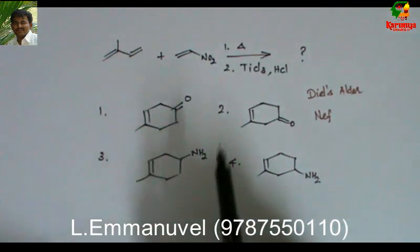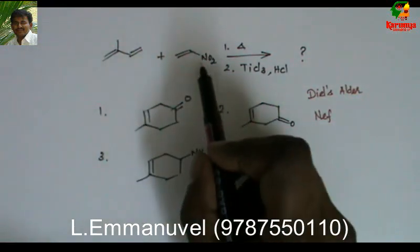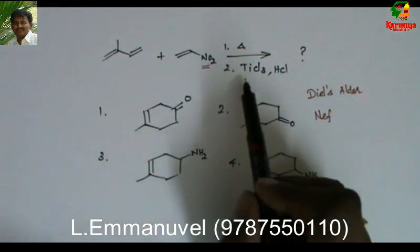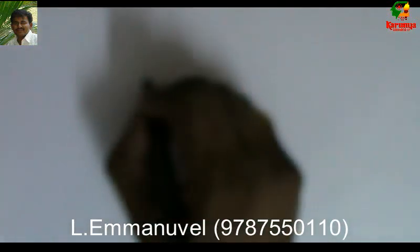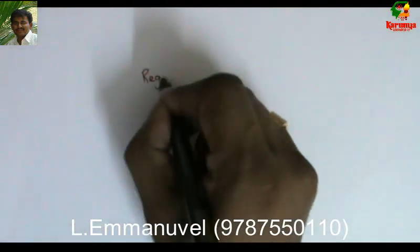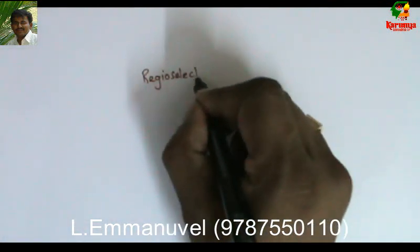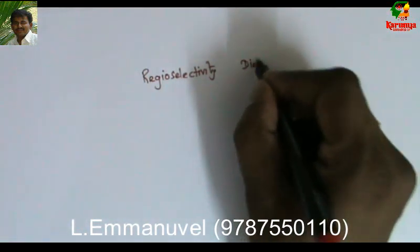Further, in all four options, this NO2 group is missing — it is getting converted into something else during the second reaction condition. In order to solve this, you should first know regioselectivity in Diels-Alder reaction.